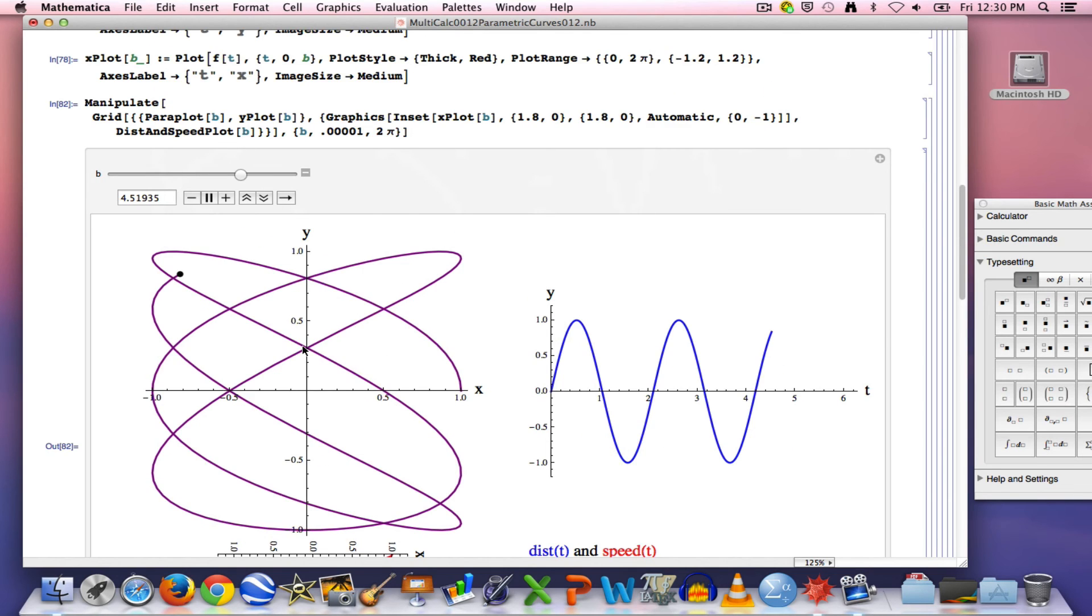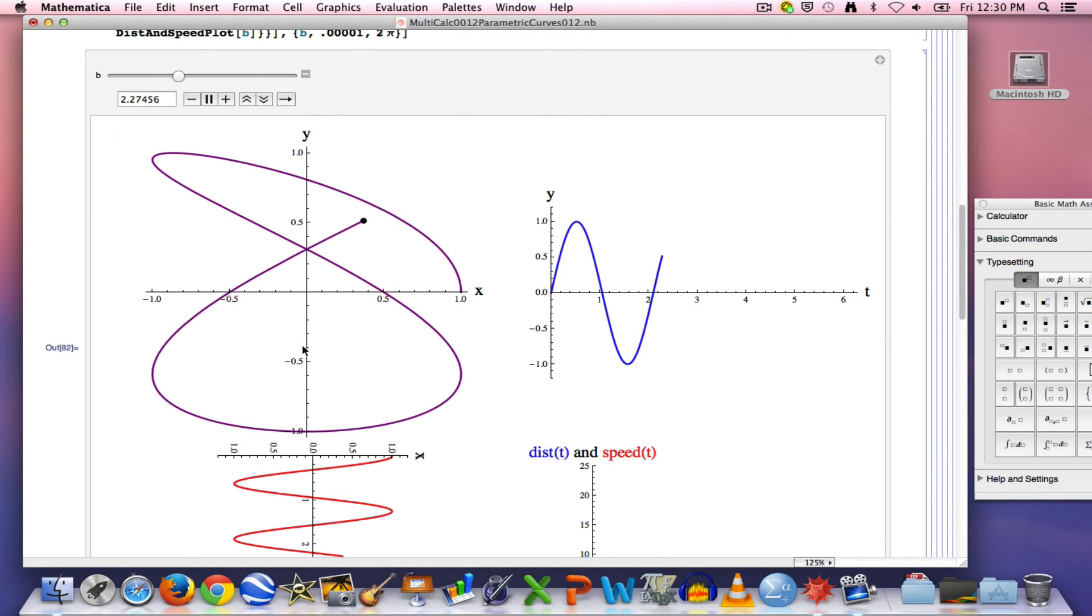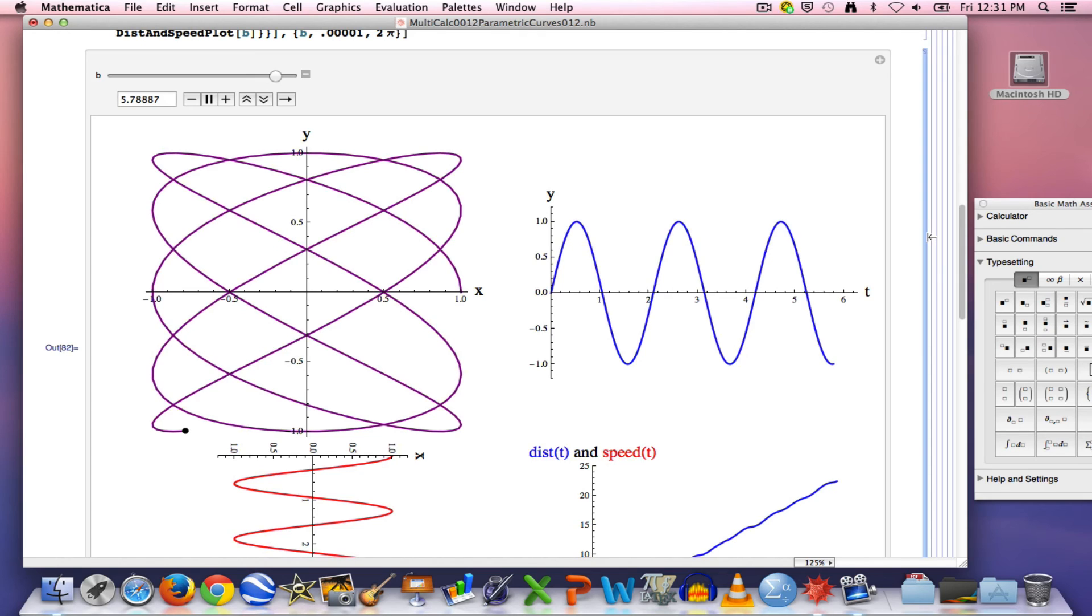Altogether, though, when you put them together in the parametric curve, the period is not 2 pi over 3, and it's not 2 pi over 5. In fact, it's 2 pi. That's pretty interesting. You don't get back to where you started until after 2 pi units of time have gone by. Actually, that would not always be the case.